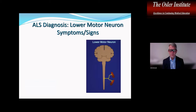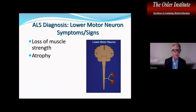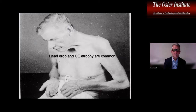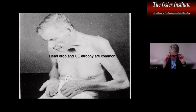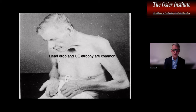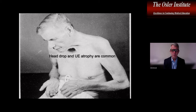Lower motor neuron symptoms and signs include loss of muscle strength, atrophy, fasciculations, and muscle cramps. From lower motor neuron involvement you also get dyspnea, dysphagia, and dysarthria. Head drop is very common in ALS, though not specific to it. Upper extremity atrophy is very common because of the large number of anterior horn cells going to the upper extremity — that's why we have a cervical enlargement. ALS can be asymmetric, especially early, and tends to start at one point along the neural axis and then spread contiguously from that point.